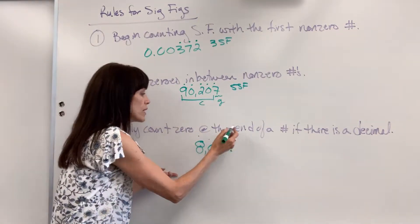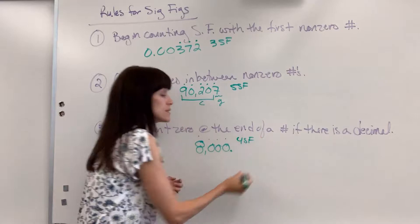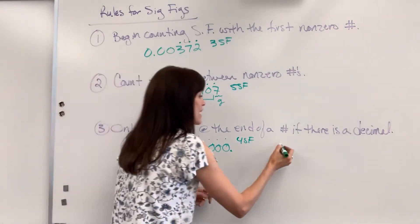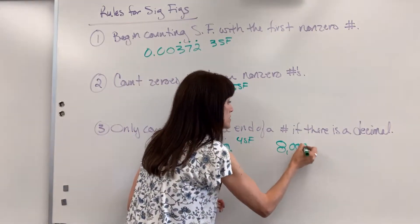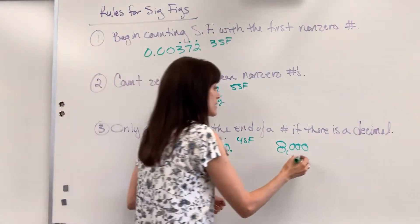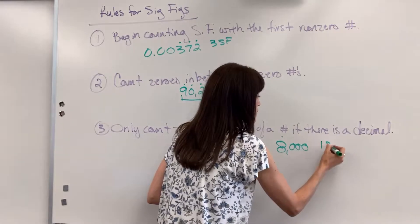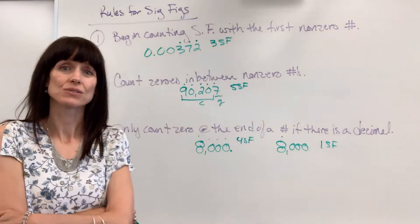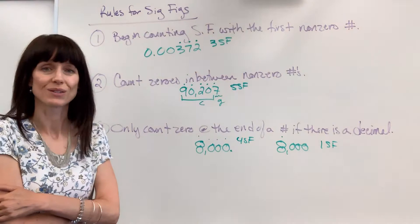That means I can count the zeros. One, two, three, four. There are four sig figs. Now, to contrast that, if I had 8,000 with no decimal, we've only got one sig fig. And that one sig fig is actually the guess. So it really doesn't tell us a lot.